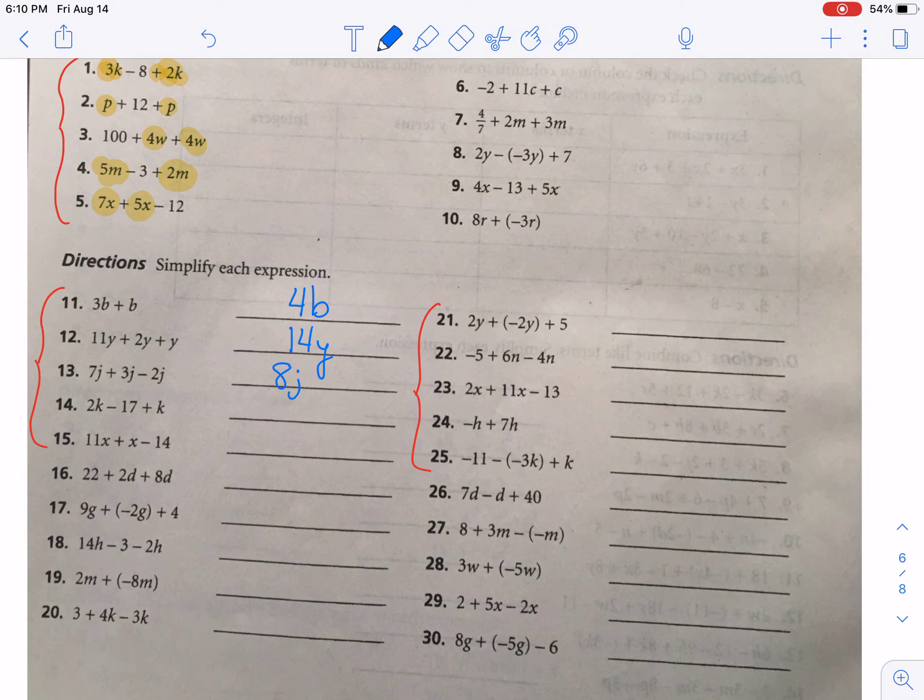For 14, we have two of them, two terms that have a k, and then the minus 17. So 2k plus 1k, those go together. Those can be combined into 3k. Then you just tack that minus 17 on at the end. Or if you prefer to put it first, you can say negative 17 plus 3k. Okay, for 15, we have 11x plus invisible 1x. So that's 12x. And we just keep the minus 14 along for the ride.